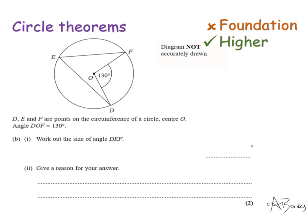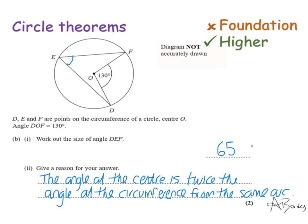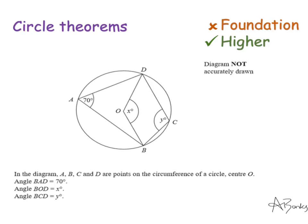Part B is another fairly simple one: D, E, and F are points on the circumference and the centre is O, and the angle DOF is 130 degrees. Work out the size of angle DEF. I know that an angle at the circumference is half of the angle at the centre from the same arc, so this angle is half of 130 — it's 65 degrees. The reason: the angle at the centre is twice the angle at the circumference from the same arc.